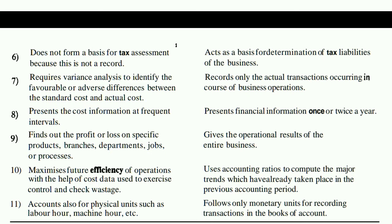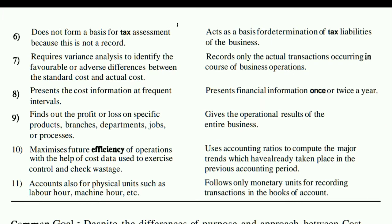The tenth point: cost accounting maximizes future efficiency of operations using cost data to exercise control and check wastage. With the cost data you are keeping, you can determine how much cost you can reduce and increase operational efficiency. Financial accounting, on the other hand, uses accounting ratios to compute and analyze trends that have already taken place in previous accounting periods — it analyzes historical cost data from the past.